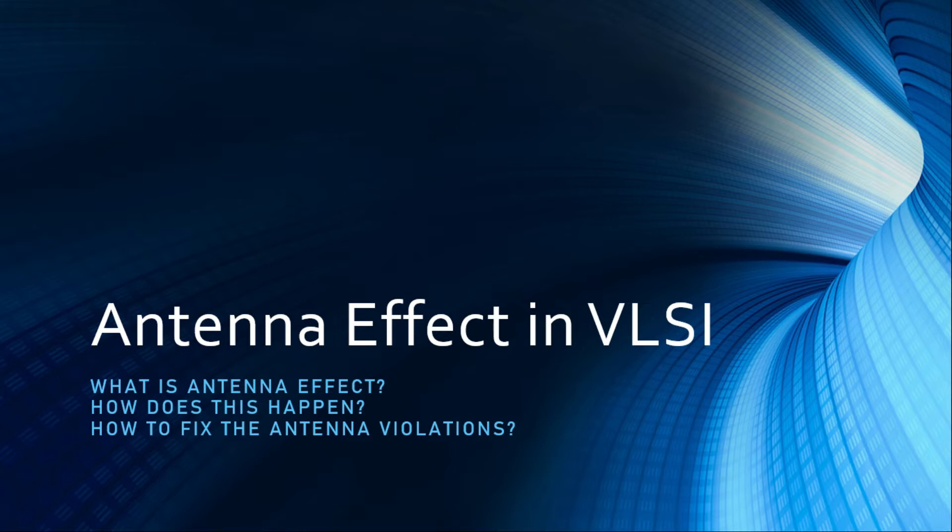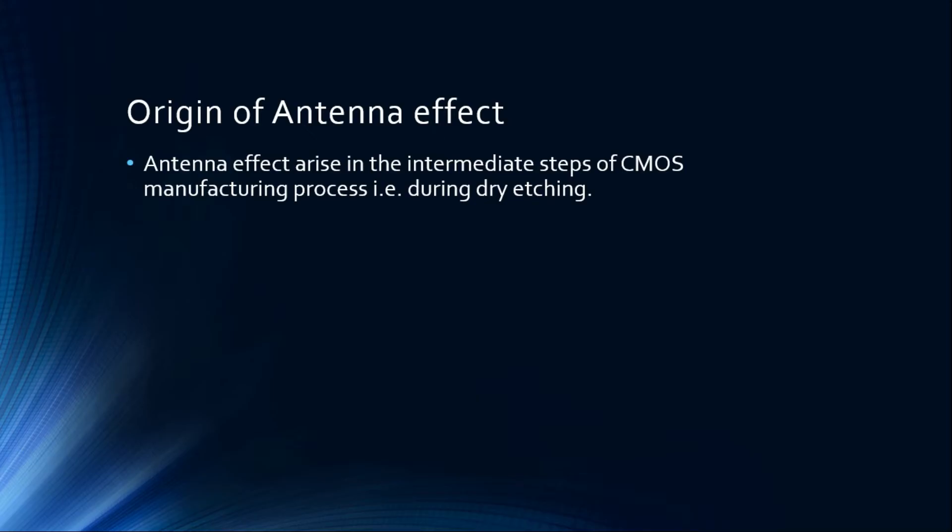As I said earlier, antenna effect arises in the intermediate steps of CMOS manufacturing process, that is during dry etching. I'm assuming that you already know the CMOS manufacturing process flow. Etching is a phenomenon that happens after lithography. There can be two types of etching as we know: one is wet etching and dry etching. Wet etching is not usually preferred because it is isotropic in nature and it's not good for smaller geometries because it's difficult to control.